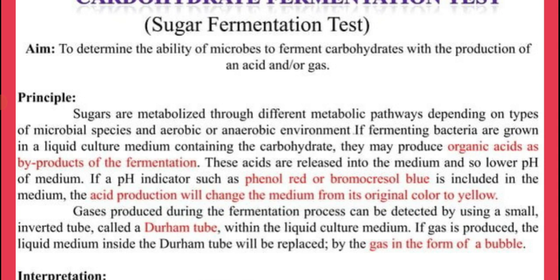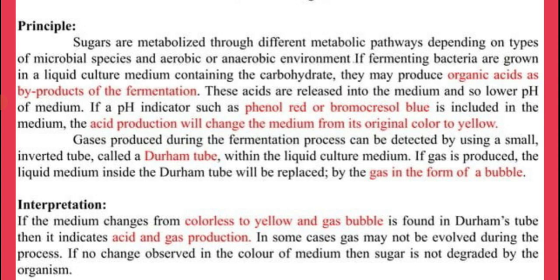Gaseous products produced during fermentation can be detected using a small inverted Durham tube. If gas is produced, the liquid medium inside the Durham tube will be displaced by a gas bubble. Gases like carbon dioxide and O₂ will collect in the Durham tube in the form of a bubble. If the indicator used is phenol red, the medium changes from reddish-orange to yellow with a gas bubble. If an Andrade indicator is used, the color changes from colorless to pink with a gas bubble, indicating acid and gas production.